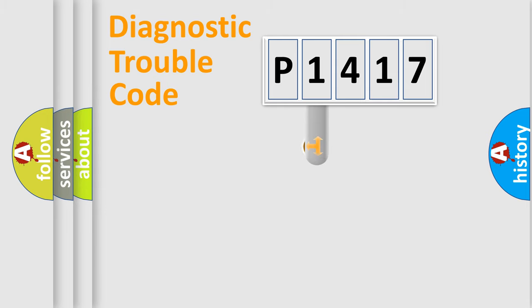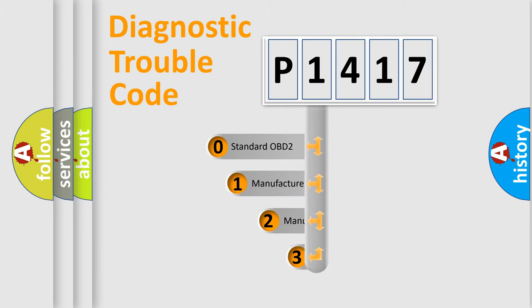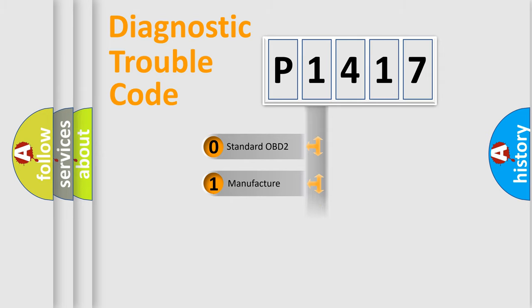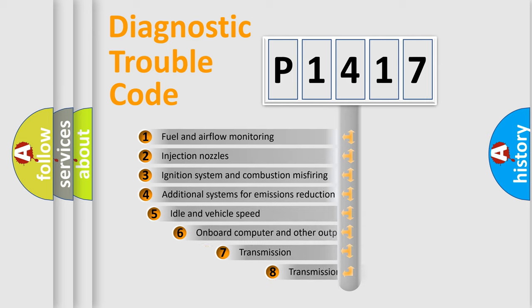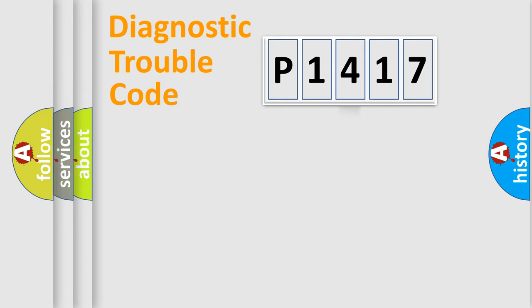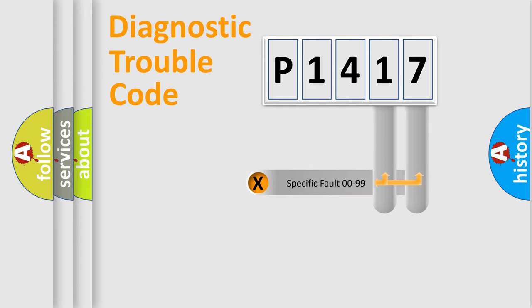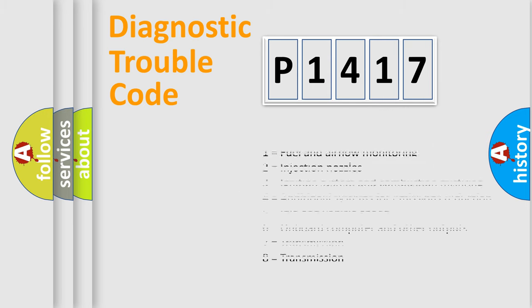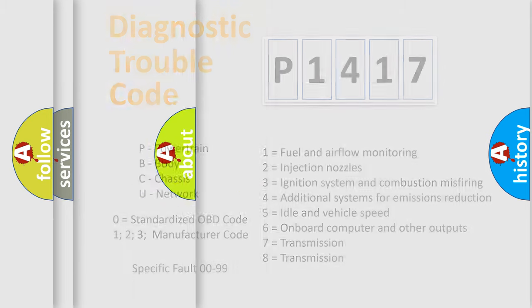This distribution is defined in the first character of the code. If the second character is expressed as zero, it is a standardized error. In the case of numbers 1, 2, or 3, it is a manufacturer-specific error expression. The third character specifies a subset of errors. This distribution is valid only for the standardized DTC code. Only the last two characters define the specific fault of the group, and this division is valid only if the second character is expressed by the number zero.